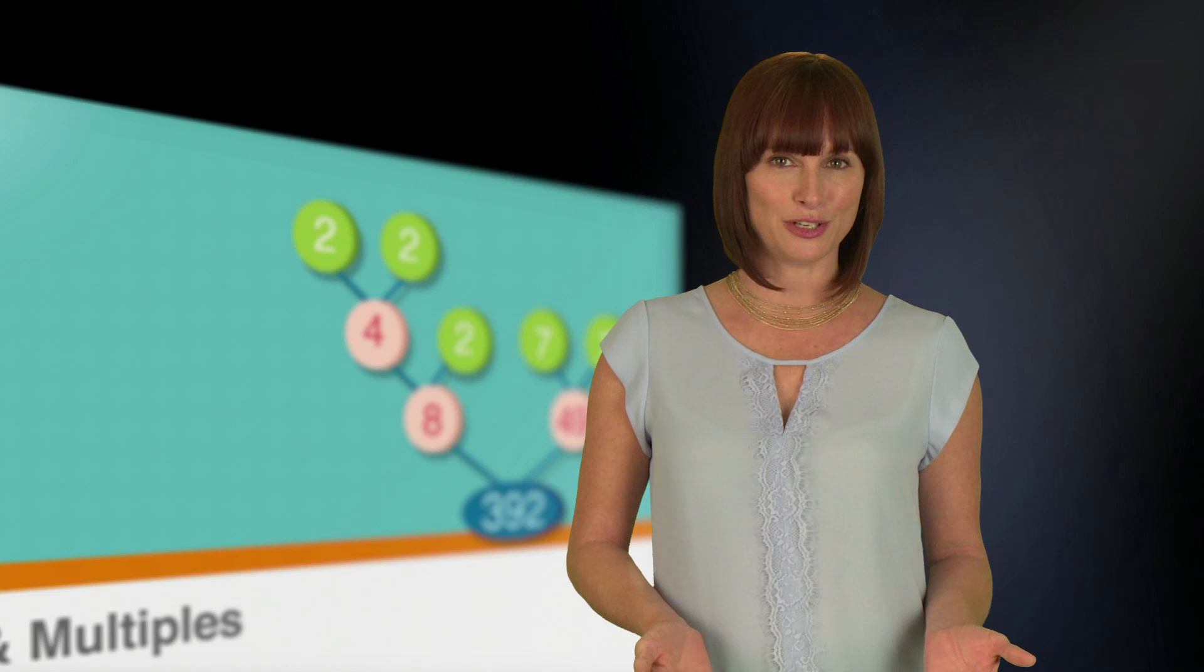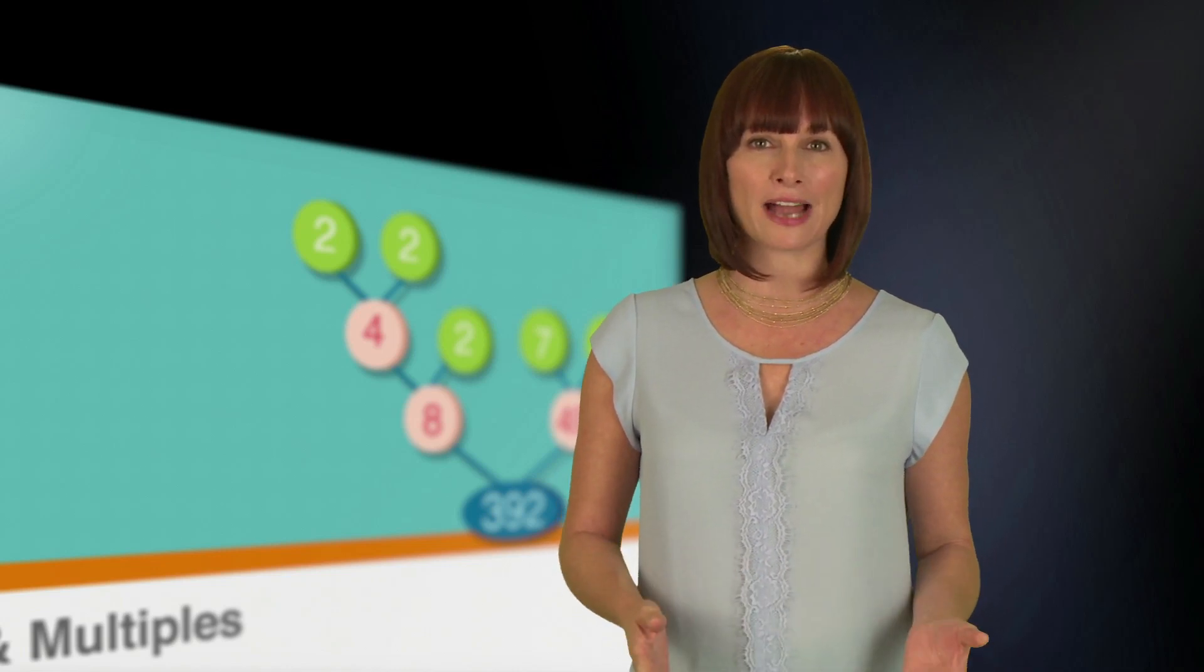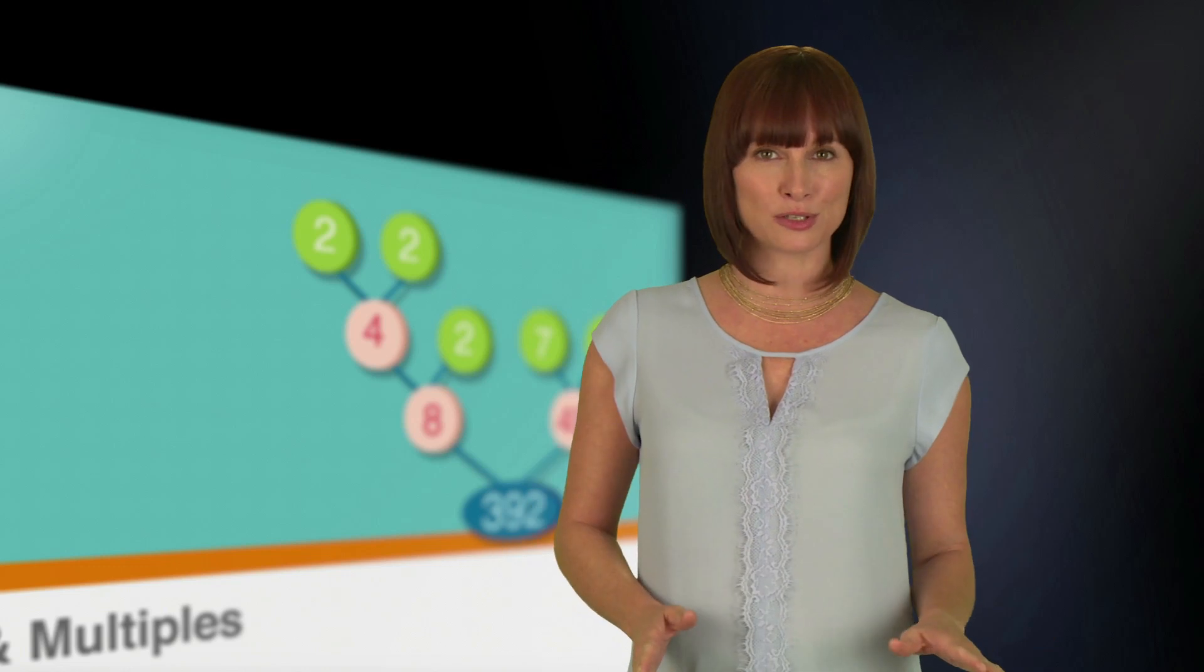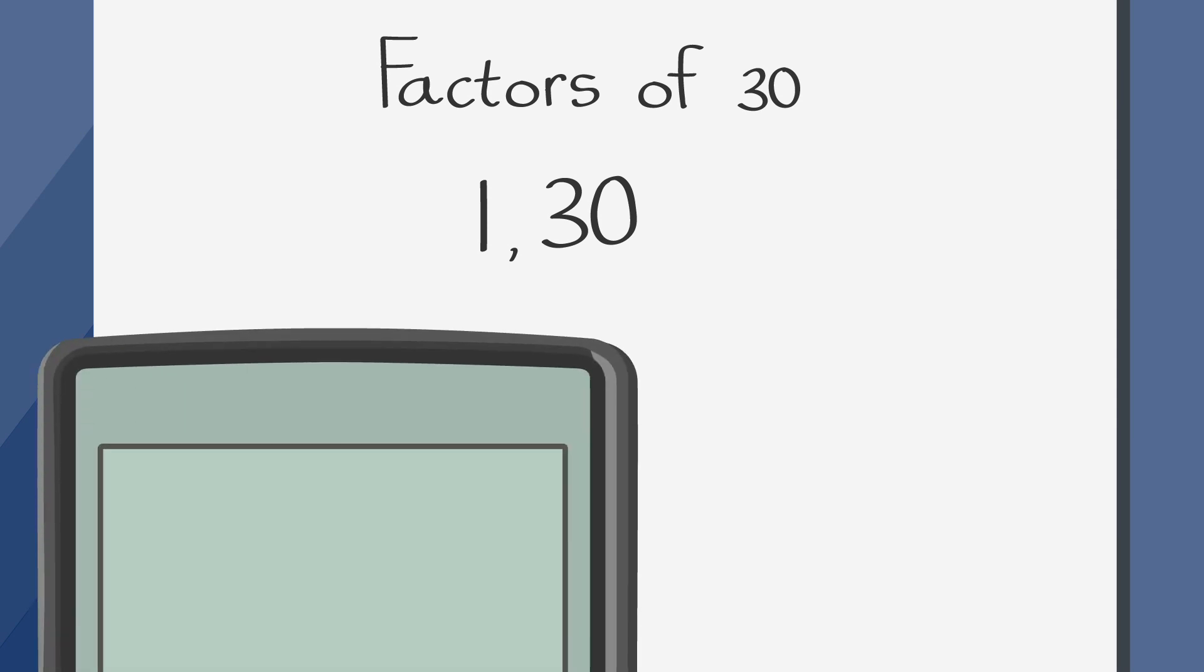On the calculator section, you can use your calculator to find factors by finding the square root of the number and considering all the integers from 2 to the square root of the number you're factoring. I'll show you what I mean. If we're looking for the factors of 30, start by writing 1 and 30 down, since we know that they're definitely factors of 30. Plug the square root of 30 into your calculator.